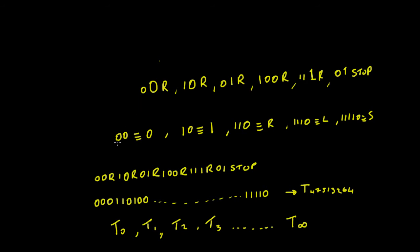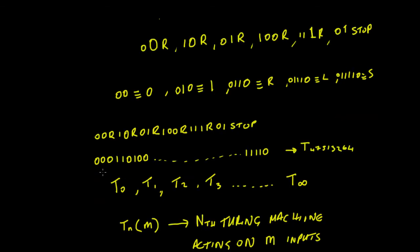We could represent this algorithm using a contraction notation: if we let zero-zero define 'zero', zero-one-zero define 'one', zero-one-one define 'R', zero-one-one-one-zero define 'L', and four zeros followed by four ones and a zero define 'stop'. We can then rewrite the instructions on one line, removing the commas — so we just have zero-zero-R then one-zero-R, putting them all together.